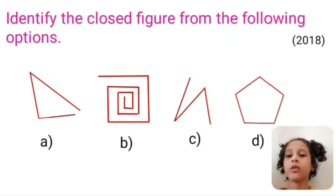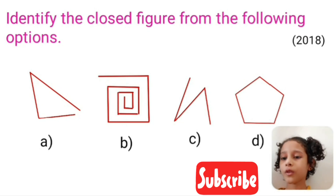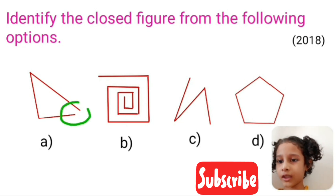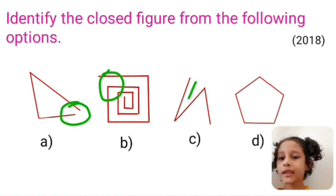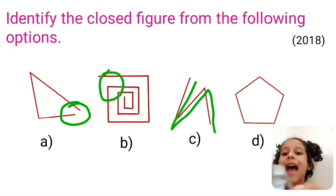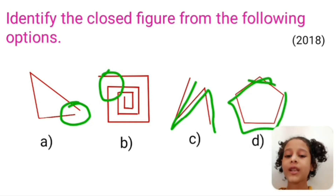Identify the closed figure from the following options. This is not a closed figure. This is not a closed figure. This is also not a closed figure — these are zigzag lines. And this is a closed figure. So option D is our correct option.